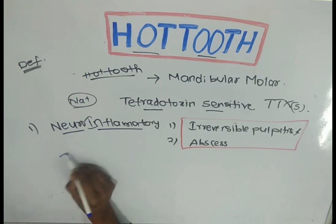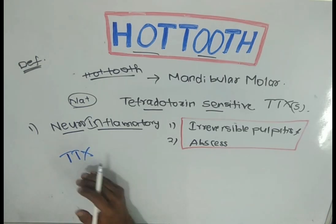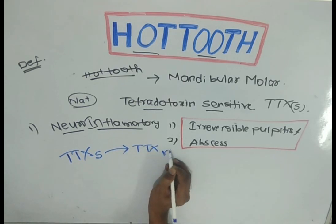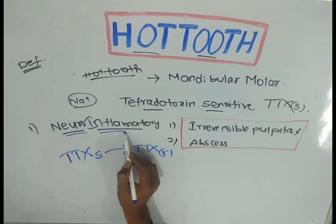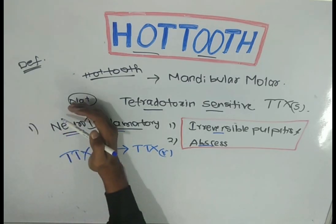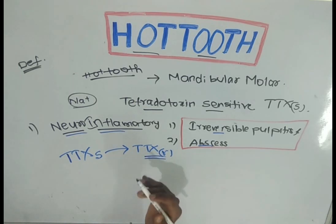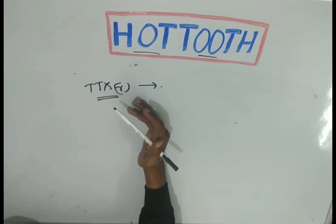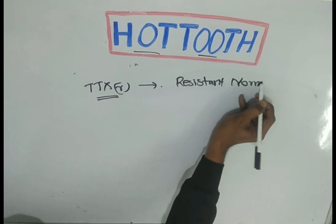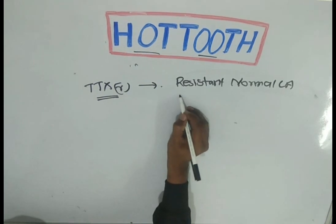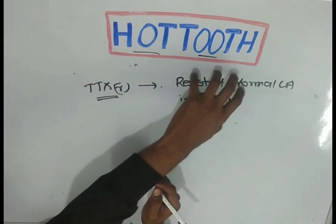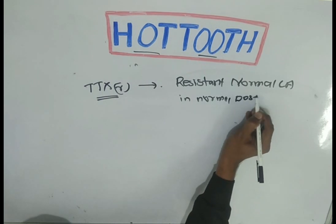In neuroinflammatory conditions like irreversible pulpitis and abscess, these tetrodotoxin-sensitive sodium-gated channels are converted into tetrodotoxin-resistant channels. These tetrodotoxin-resistant channels are resistant to normal local anesthetic — that is lignocaine — in normal doses.